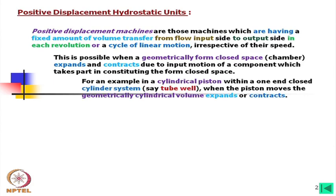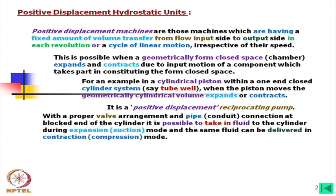For example, consider a cylindrical piston within an enclosed cylinder system. When the piston moves, the geometrically cylindrical volume expands or contracts — this is called a positive displacement reciprocating pump. With a proper valve arrangement and pipe conduit connection at the blocked end of the cylinder, it is possible to take in fluid during expansion, which is suction mode, and the same fluid can be delivered in contraction or compression mode.